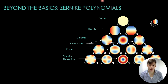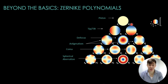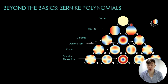So why do Zernike polynomials matter? Zernike polynomials allow us to quantify each type of aberration present in a wavefront, giving us a detailed understanding of the optical system's performance. By knowing the specific Zernike coefficients, we can tailor corrective measures to target each aberration individually. This is crucial for adaptive optics systems, which can dynamically adjust mirrors to compensate for atmospheric turbulence.